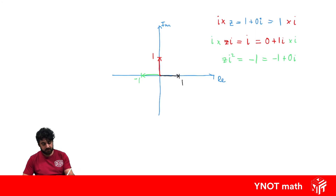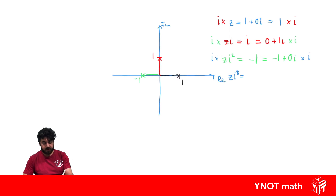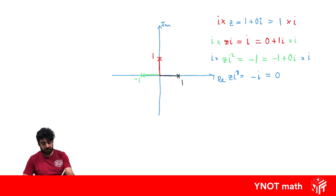Let's again multiply both sides by i. We're now at zi cubed. Minus 1 times i is minus i, and 0i times i is 0. That's equivalent to 0 minus 1i, and if we plot this we're going to minus 1 on the imaginary axis.